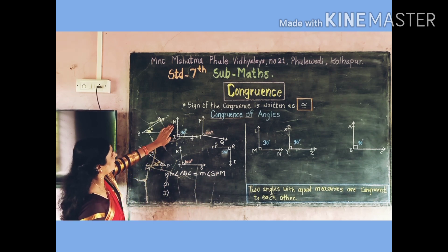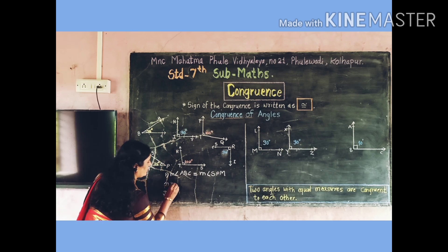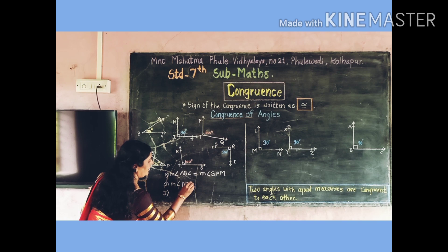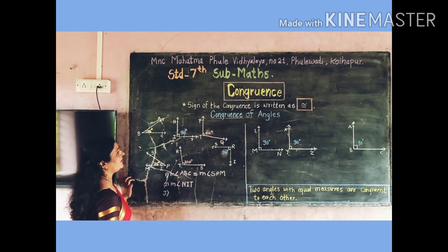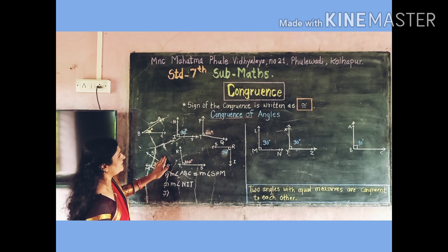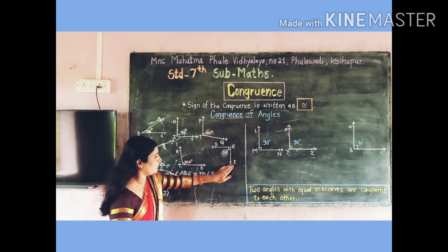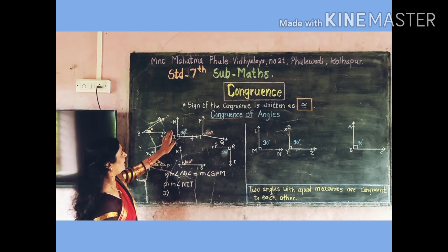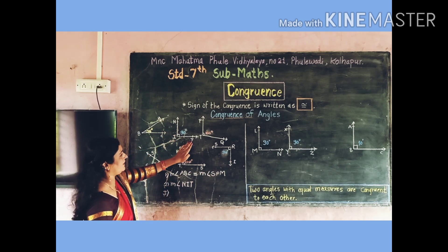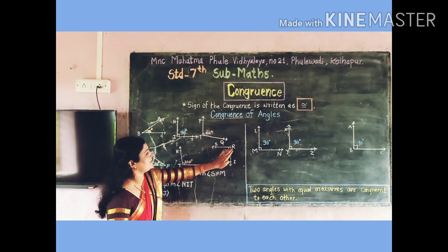Next, measurement of angle NIT is equal to 90 degrees. Among these figures, measurement of angle SRI is also 90 degrees. So here, measurement of angle NIT is equal to measurement of angle SRI.